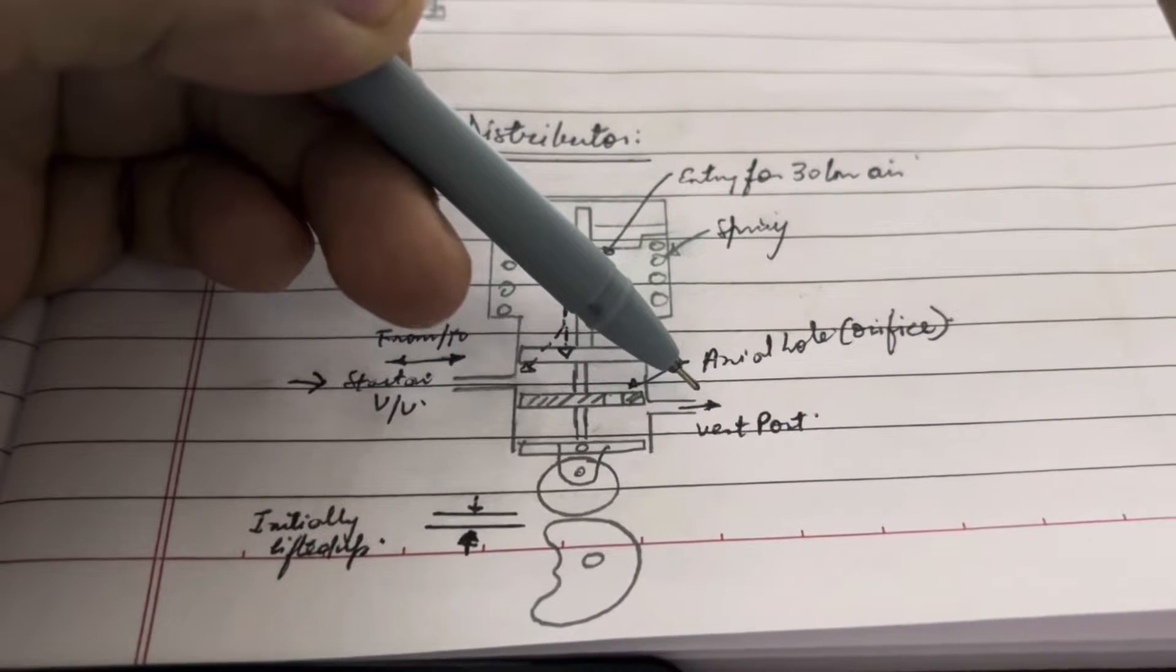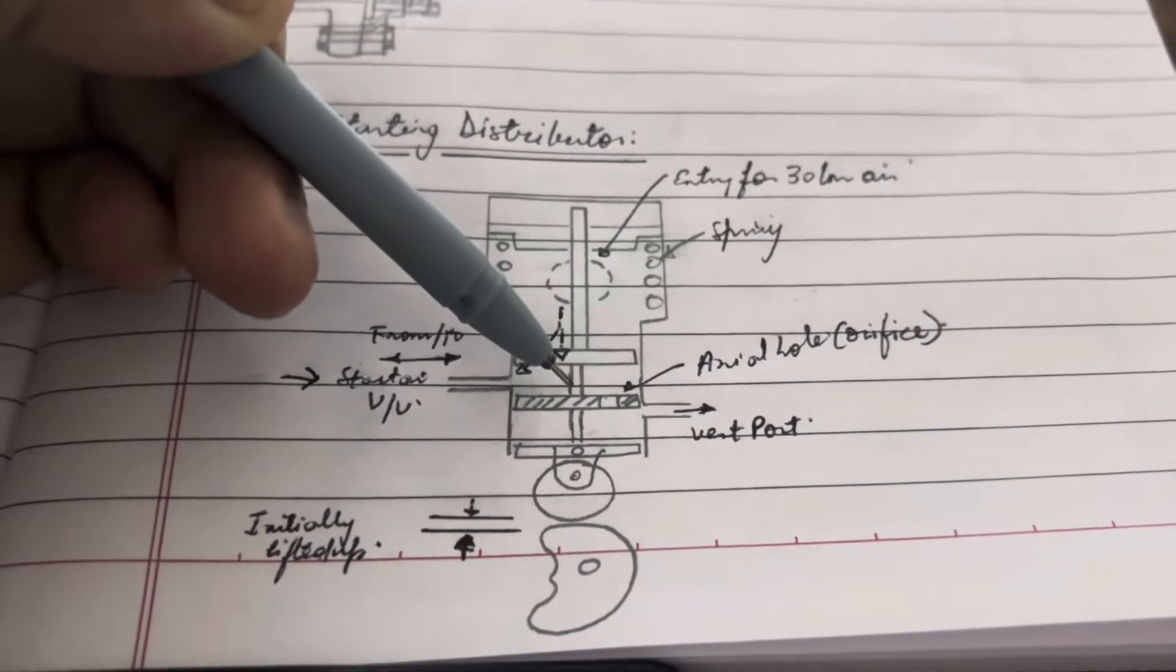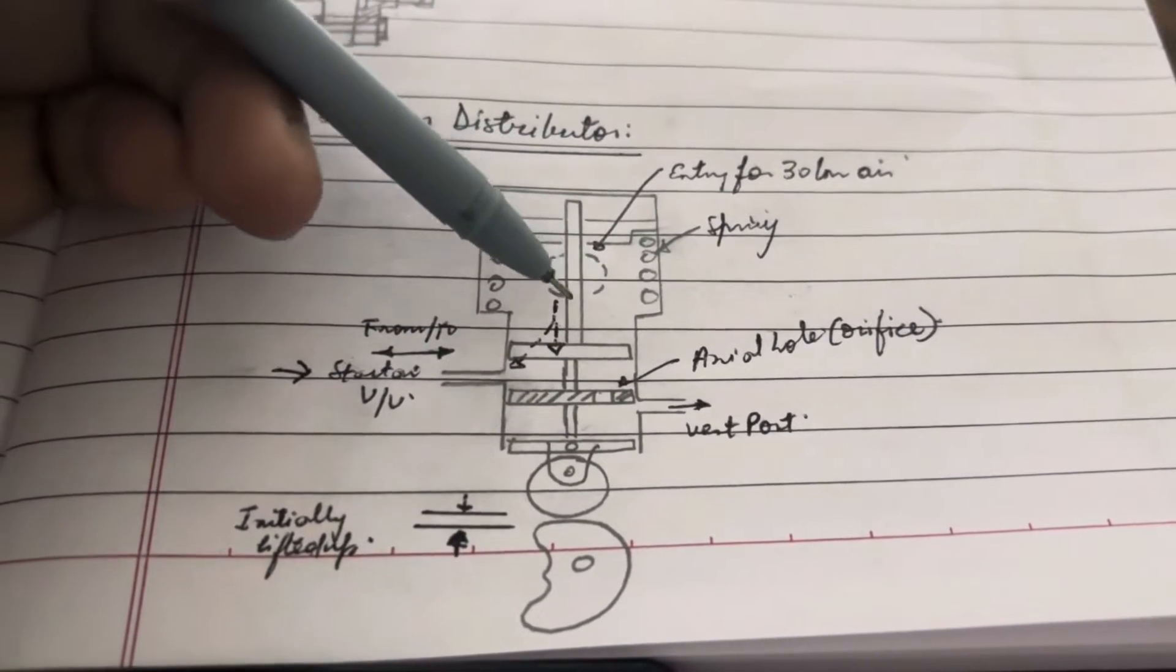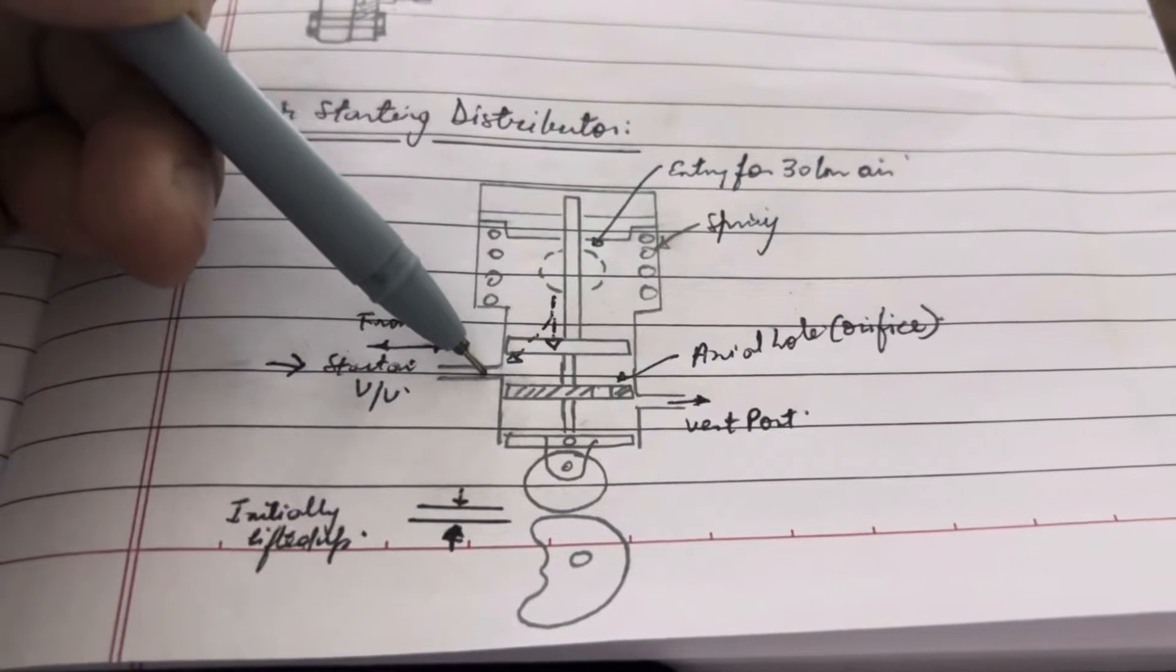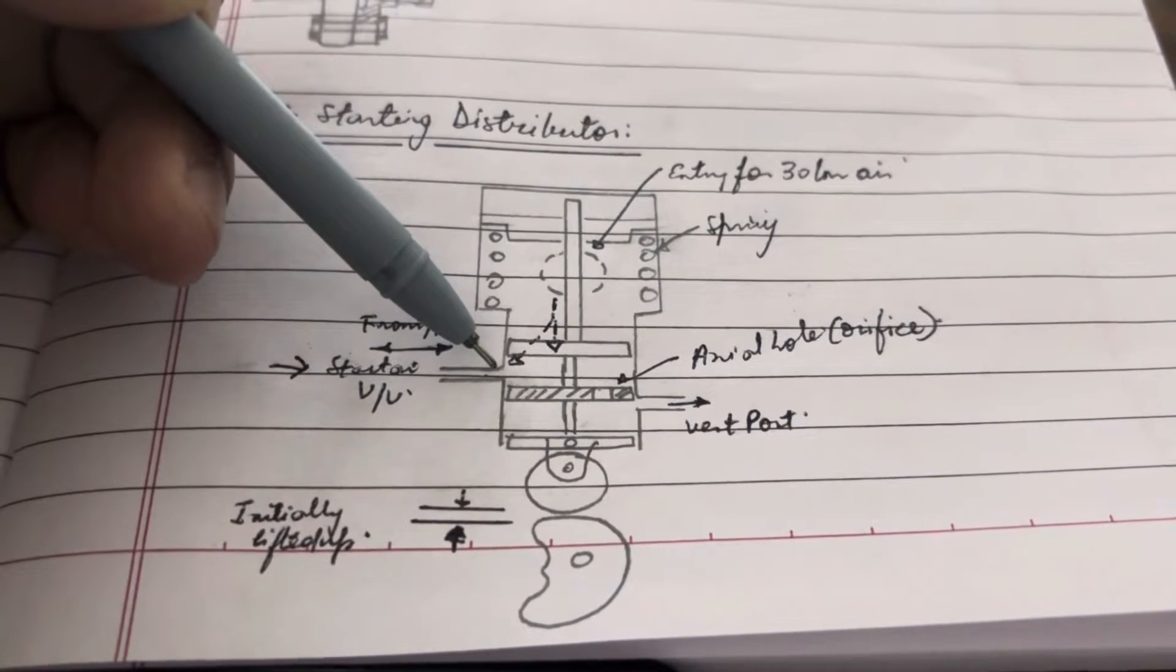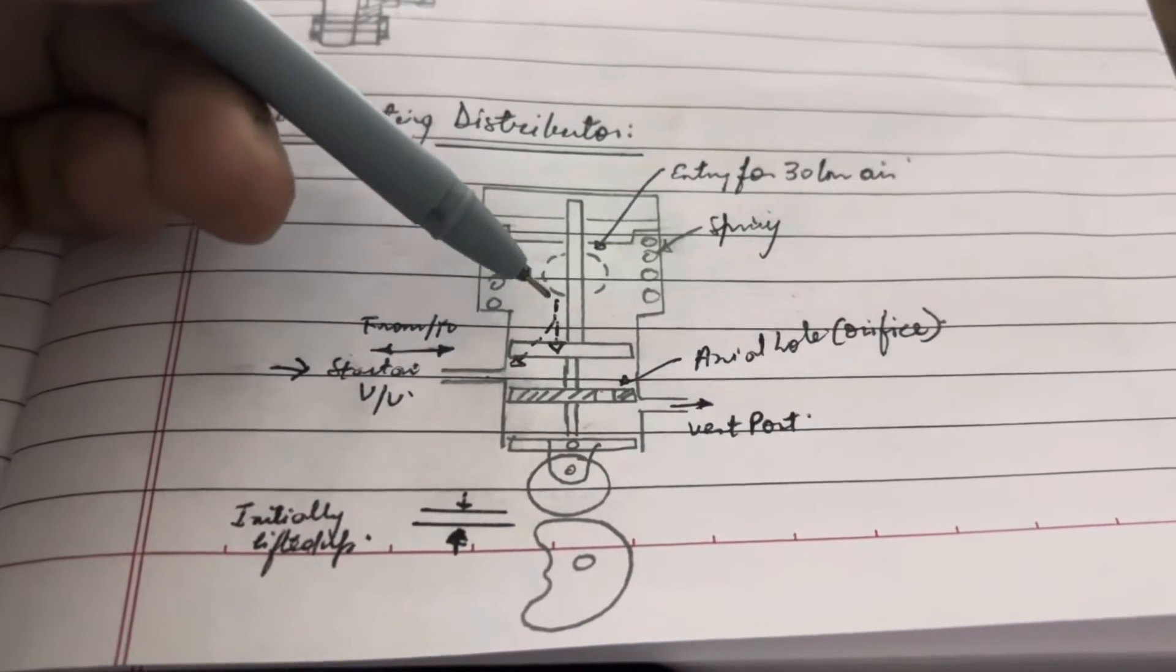Now, the other situation of equilibrium is when the air pushes the piston down. Once this port—that is, this hole—is uncovered, the air now has a place to go, and the pressurized 30 bar air goes further.